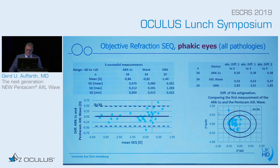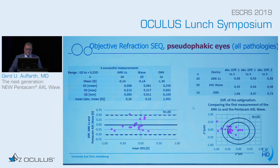Looking at astigmatism, all devices kept within 0.5 diopters of difference, as you can see here. There was not much difference and they had good repeatability. The only outlier was the Schwind device. I will talk about that later when we look at the keratoconus patients. For pseudophakic eyes, similar data — almost identical values with the Pentacam-RXL wave and the NIDEK device, with a very good Bland-Altman curve. Again, the Schwind device was not in that line.